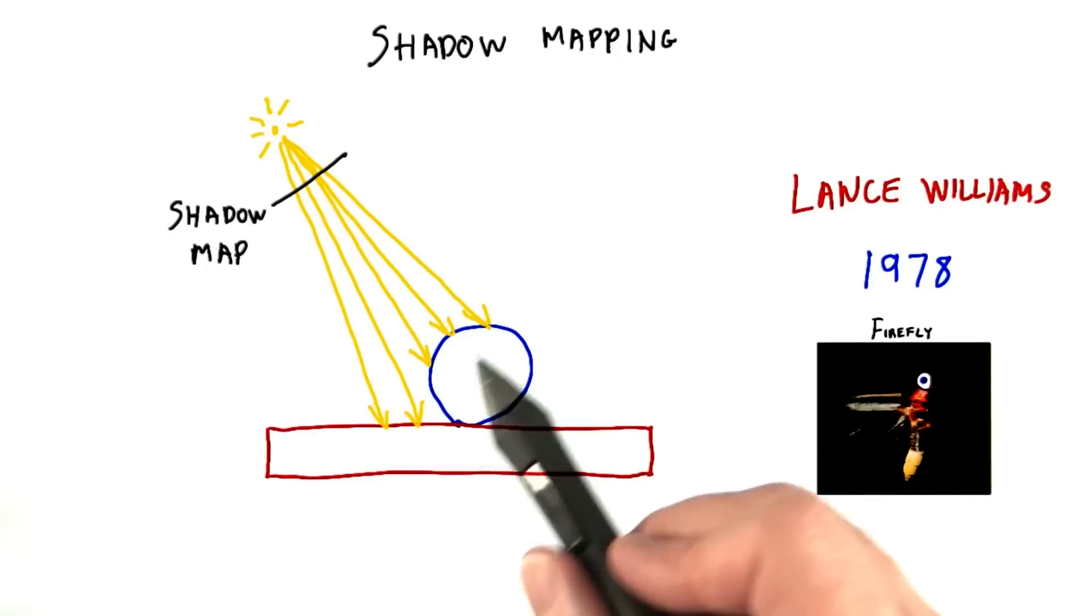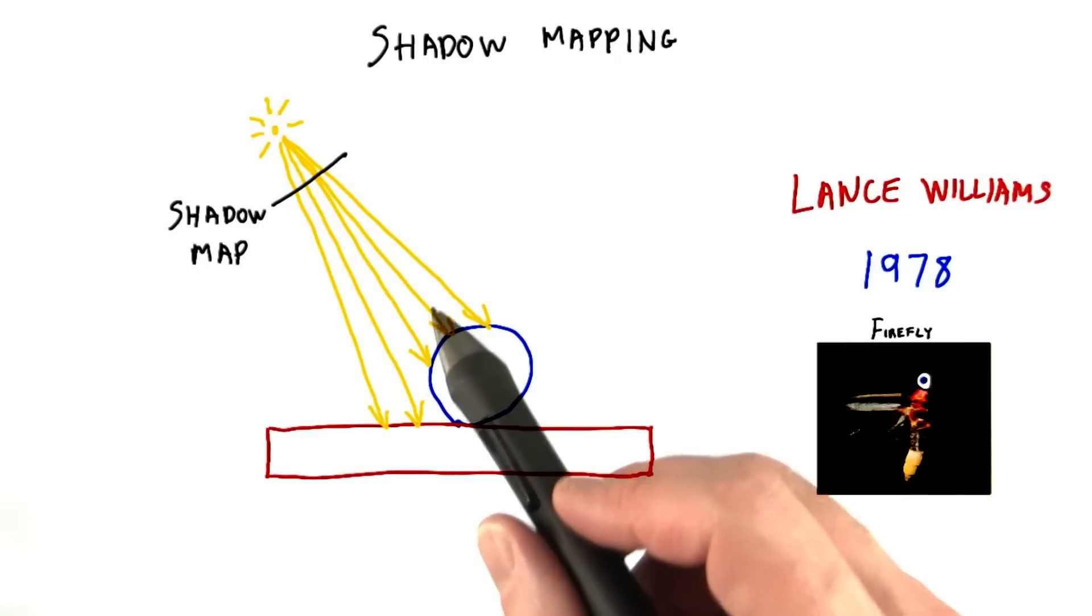If a light doesn't see a surface, that means the surface is in shadow. In fact, this is exactly how the basic algorithm is done. The scene is rendered from the view of the light and the distance of the closest objects is stored at each pixel.